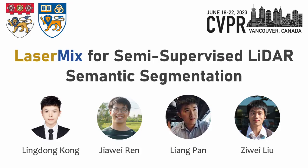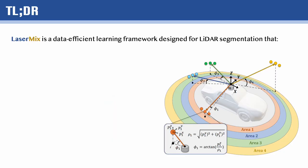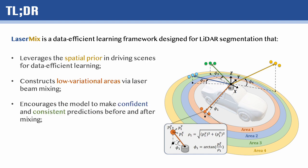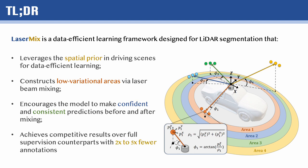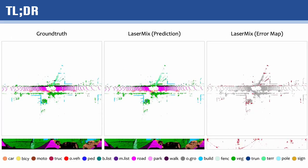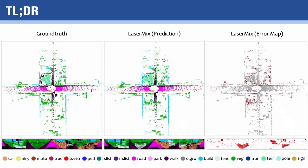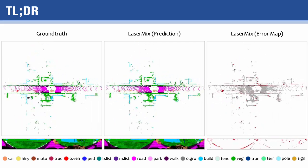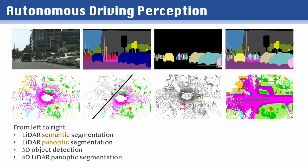We are here to introduce LaserMix, a framework for semi-supervised LiDAR semantic segmentation. LaserMix is a data-efficient learning framework designed for LiDAR segmentation. It leverages the spatial prior in driving scenes for data-efficient learning, constructs low-variation areas via laser beam mixing, and encourages the model to make confident and consistent predictions before and after mixing. It achieves competitive results over full-supervision counterparts with two to five times fewer annotations.